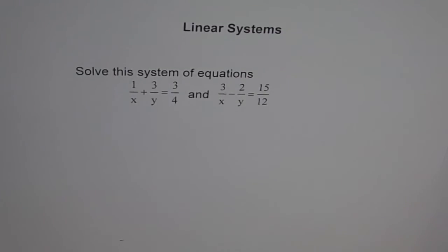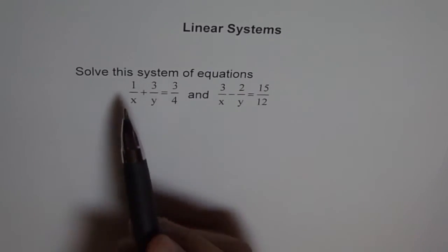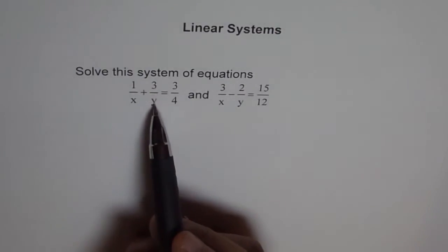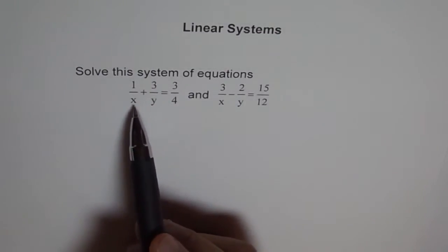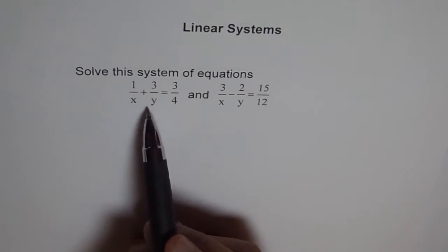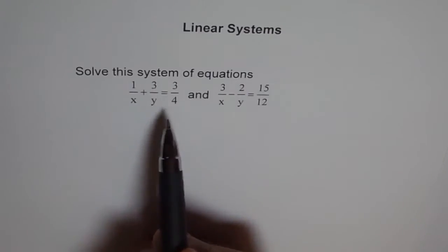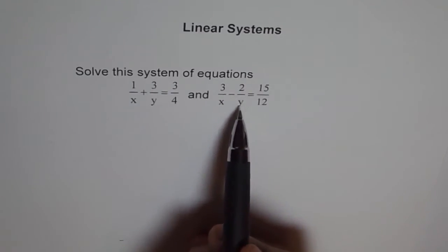Here we have a very unique system of equations. It doesn't look like linear in any case. When we have 1 over x plus 3 over y equals 3 over 4, these numbers in the denominator make it a rational equation. By no means is this a linear equation.